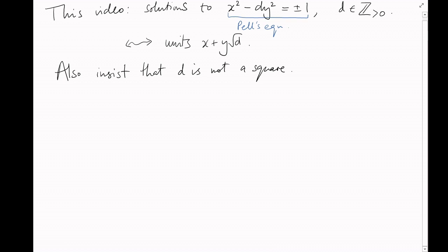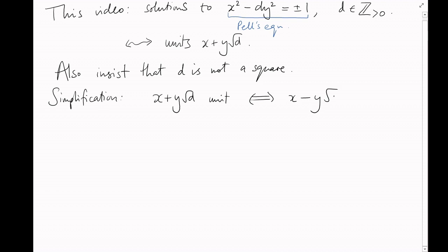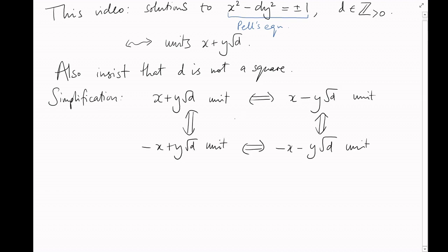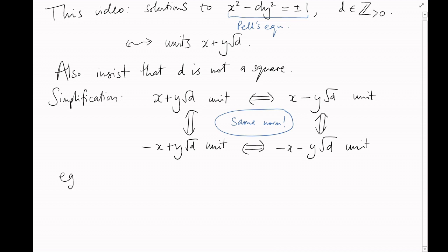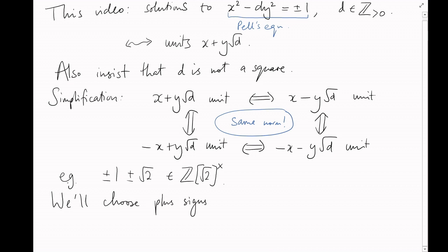Here's a simplification we're going to make throughout. Notice that x + y√d is a unit if and only if x − y√d is a unit, if and only if their negatives are units — they all have the same norm. So last video, when d = 2, I talked about the unit 1 − √2, but I could easily have talked about 1 + √2 or minus 1 ± √2. We have flexibility to choose whichever signs are most convenient, and to keep things simple I'm mostly going to work with positive x and y.